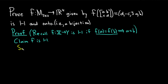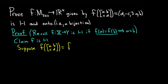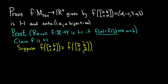Suppose f of the matrix [a, b, c, d] is equal to f of the matrix [ā, b̄, c̄, d̄] — I'm using barred variables to distinguish the two matrices. Now we have to show that these two matrices are actually the same.